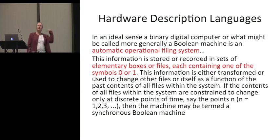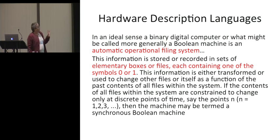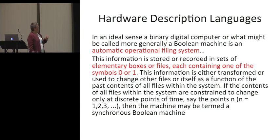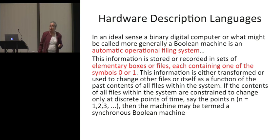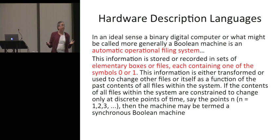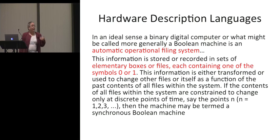It's interesting to try to imagine oneself back to 1952 — even I wasn't born then. The abstract talks about how a Boolean machine is like an automatic operational filing system. The information is stored in sets of elementary boxes or files, each containing one of the symbols 0 or 1. This was when people didn't even agree what to call things or what a computer was. But this paper also talks about how to generate digital circuits from descriptions.